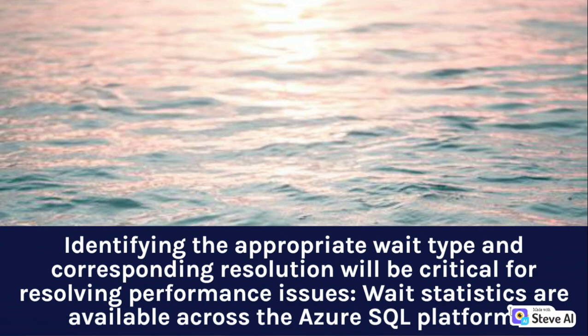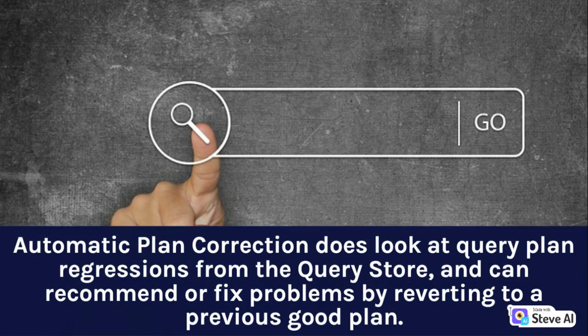Identifying the appropriate wait type and corresponding resolution will be critical for resolving performance issues. Wait statistics are available across the Azure SQL platform. Automatic plan correction looks at query plan regressions from the query store and can recommend or fix problems by reverting to a previous good plan.